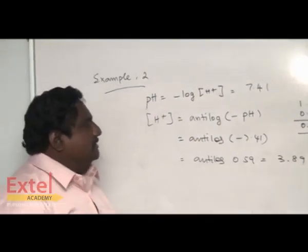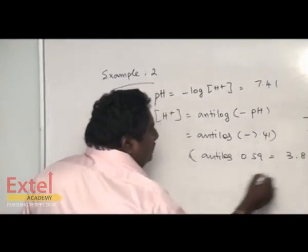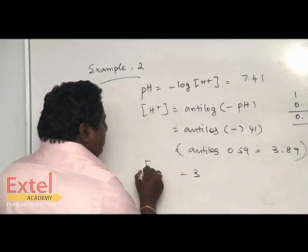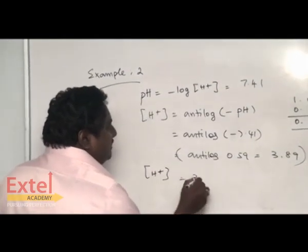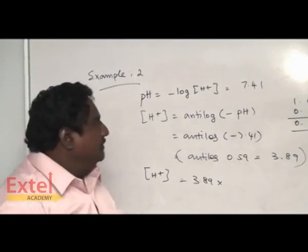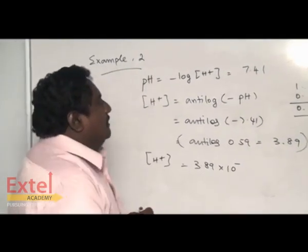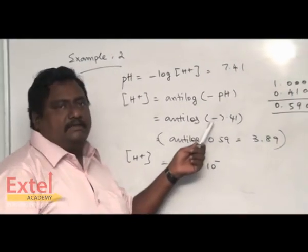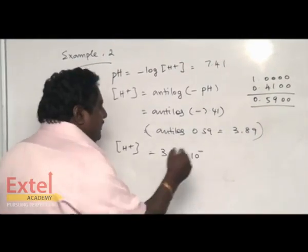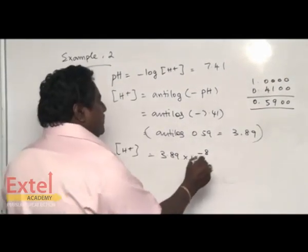Antilog is 3.89. Now the answer H⁺ concentration must be written as 3.89 into 10 to the power of minus, here 7 is there, add one number and write it as 8. This will be the pH to H⁺ concentration.